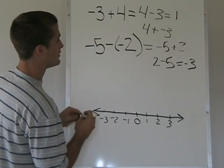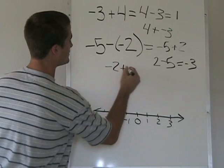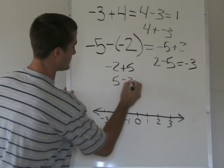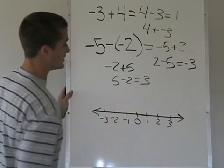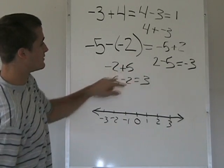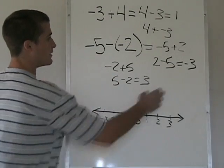If we had a negative 2 plus 5, we could write that as 5 minus 2 and get a positive 3. Here we just switch this negative sign and wind up with a negative answer.